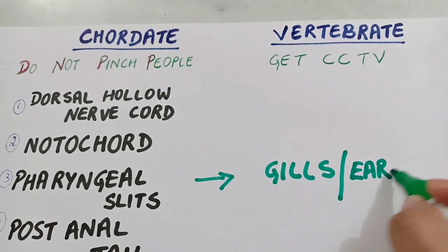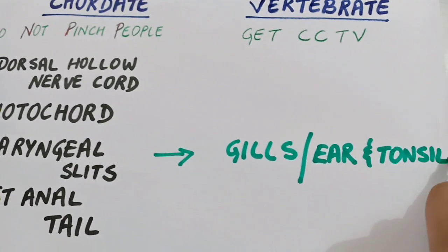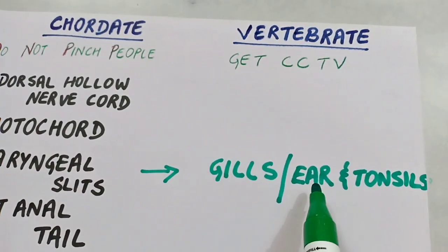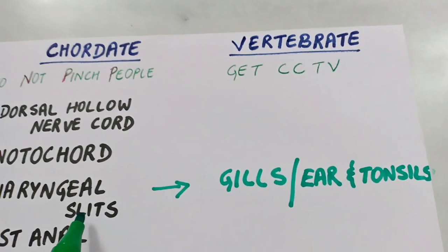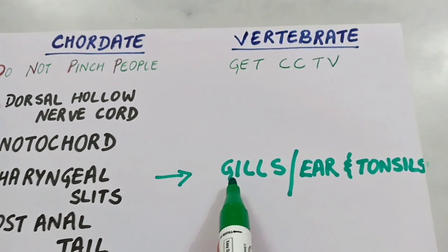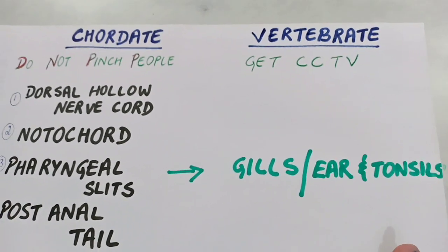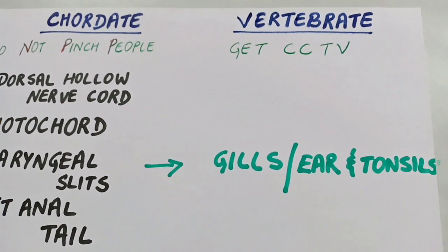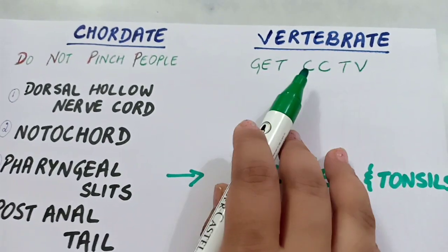G is for gills, E and T is for ear and tonsils. So the pharyngeal gill slits in later stages of development either get converted into gills — like in fishes — or into ear and tonsils, like in amphibia, reptilia, aves, and mammalia.